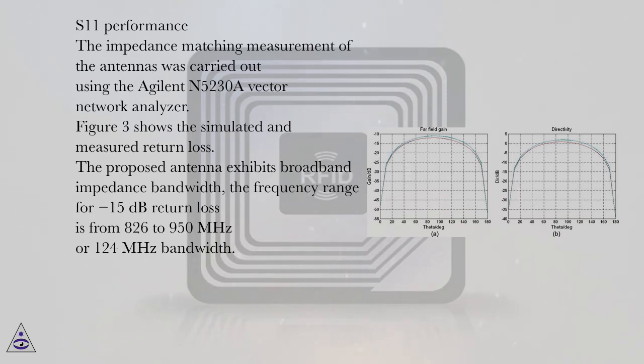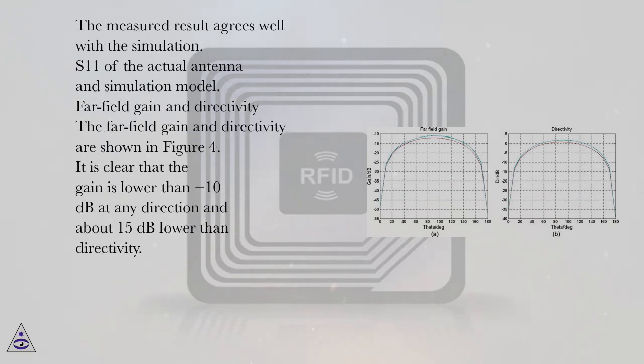The proposed antenna exhibits broadband impedance bandwidth. The frequency range for minus 15 decibel return loss is from 826 to 950 MHz, or 124 MHz bandwidth. The measured result agrees well with the simulation.